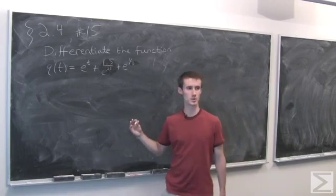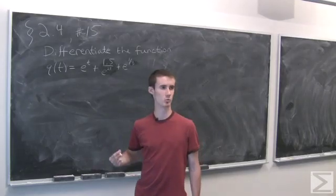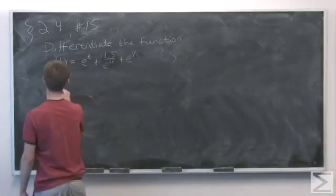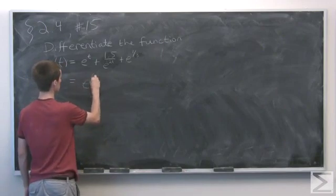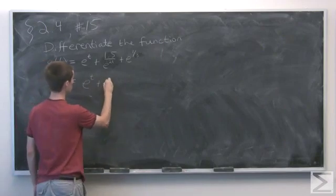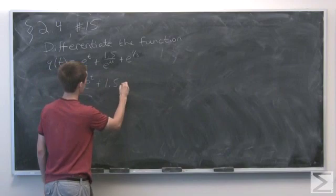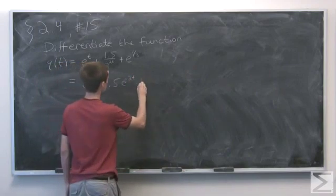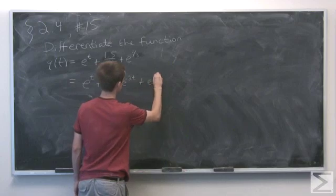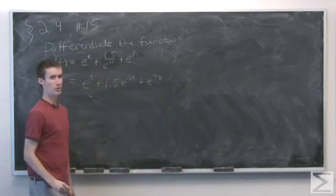Whenever we see exponents in the denominator, it's usually best to move them up into the numerator. So let's rewrite our function q in the following form: e to the t plus 1.5 e to the minus 2t plus e to the 1 third.